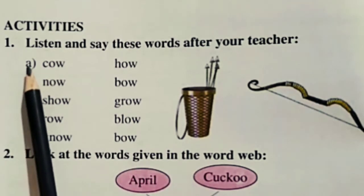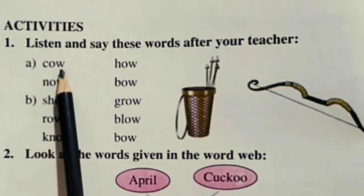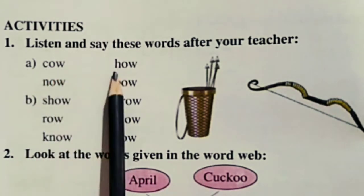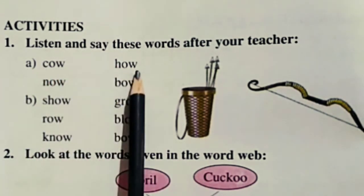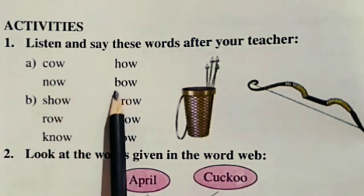Let's listen to the same. COW, HOW, NOW, BOW. These are all rhyming words ending in the same sound.